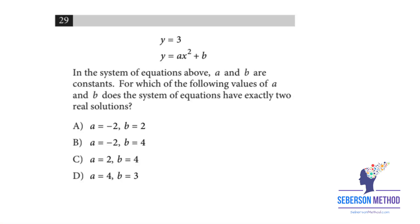Step number one, you're going to blend these two equations together. You see, they have y in common. So we're going to rewrite this as three equals ax squared plus b. Now, if we know that there are two real solutions, what should your discriminant equal to?